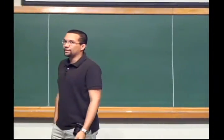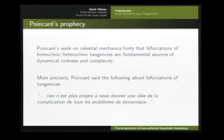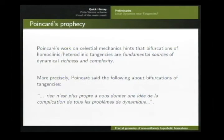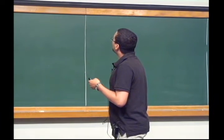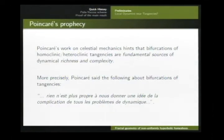Since this is the year people are celebrating the centennial of the death of Poincaré, I start with Poincaré, who in his work on celestial mechanics was hinting that it is interesting to study homoclinic and heteroclinic orbits and bifurcations because they are a source of all kinds of dynamical complexity. Here is an extract of his paper, essentially saying that nothing is more adequate to give an idea of all the complications of problems in dynamics.